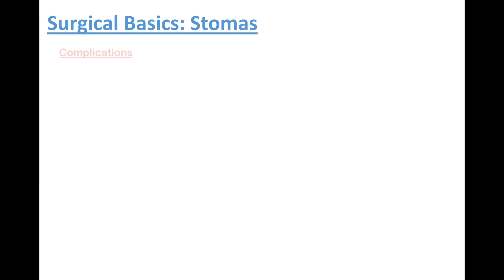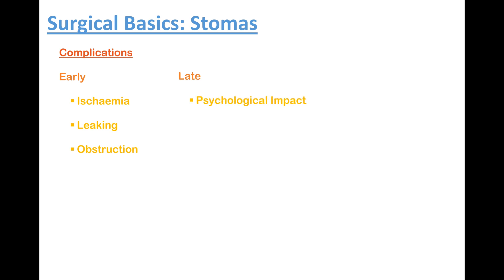Let's go through a non-exhaustive list of complications before we summarize. Early complications include mucosal sloughing caused by ischemia, persistent leaking resulting in skin erosion, obstruction by fecal impaction, and some leg complications as well. The psychological impact of a stoma should never be underestimated. You can also have a parasternal herniation as well.